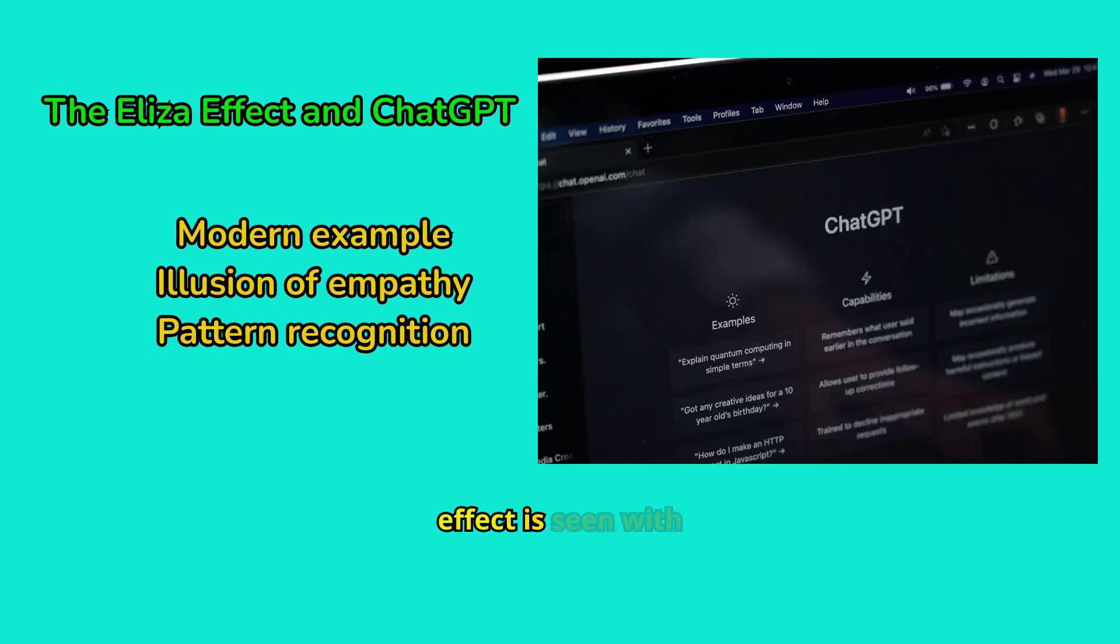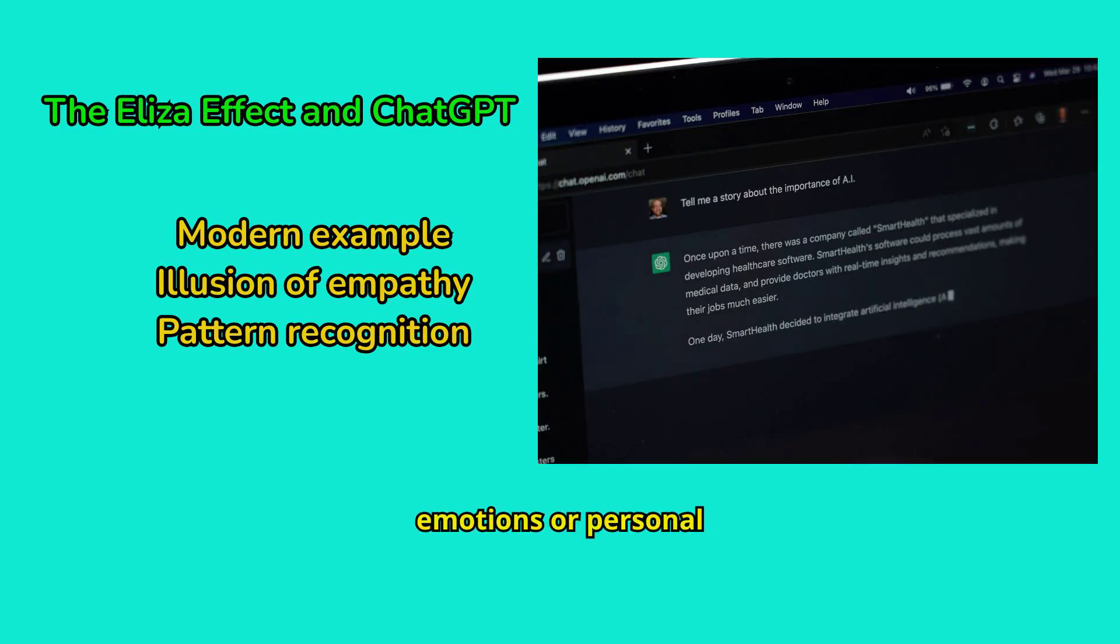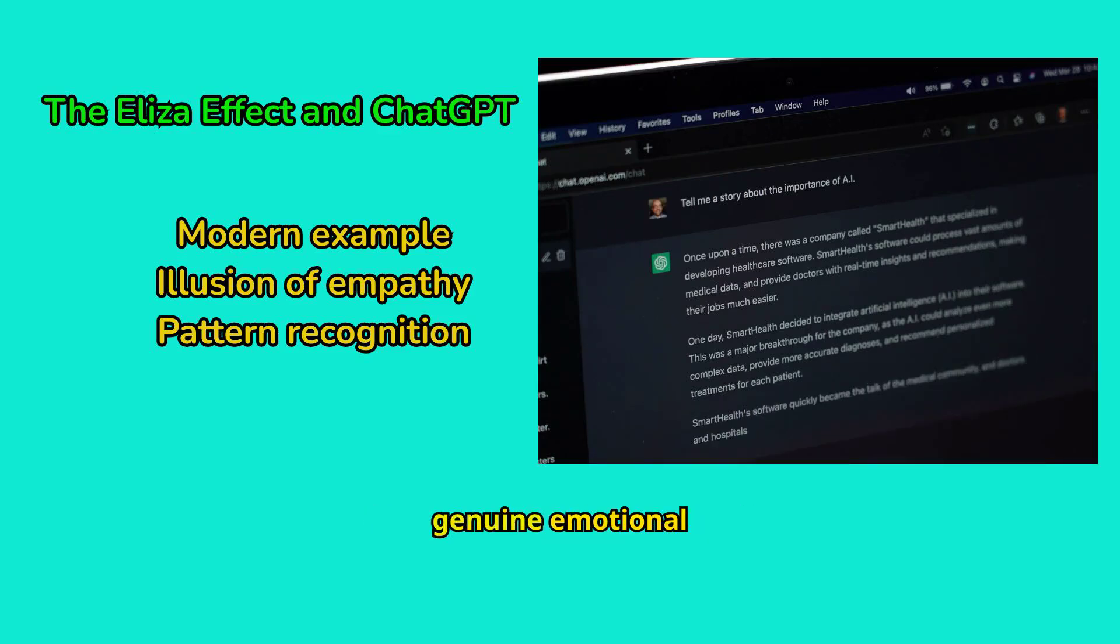A modern example of the ELISA effect is seen with ChatGPT, an advanced AI language model. Users may often feel that ChatGPT understands their emotions or personal experiences. For instance, if someone shares a problem, ChatGPT might respond in an empathetic tone, creating the illusion of genuine emotional understanding.